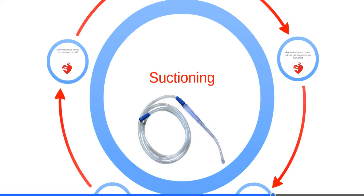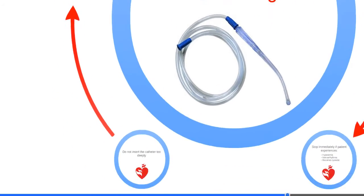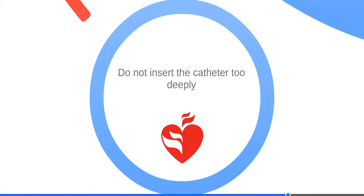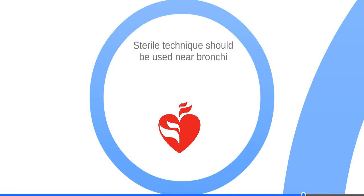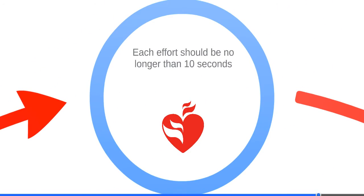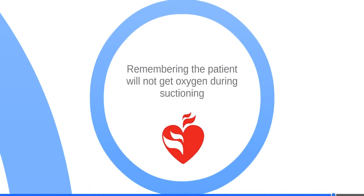Here are some tips on suctioning: Do not insert the catheter too deeply. Sterile technique should be used near the bronchi. Each effort should be no longer than 10 seconds. Keep in mind that the patient will not get oxygen during suctioning.